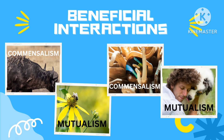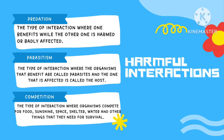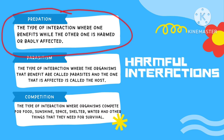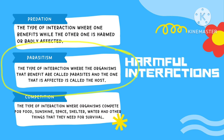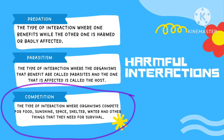Here are the examples of beneficial interactions. Next, we have three harmful interactions. First, predation — it is the type of interaction where one organism hunts another. Organisms that benefit are called parasites and the one that is affected is called the host.